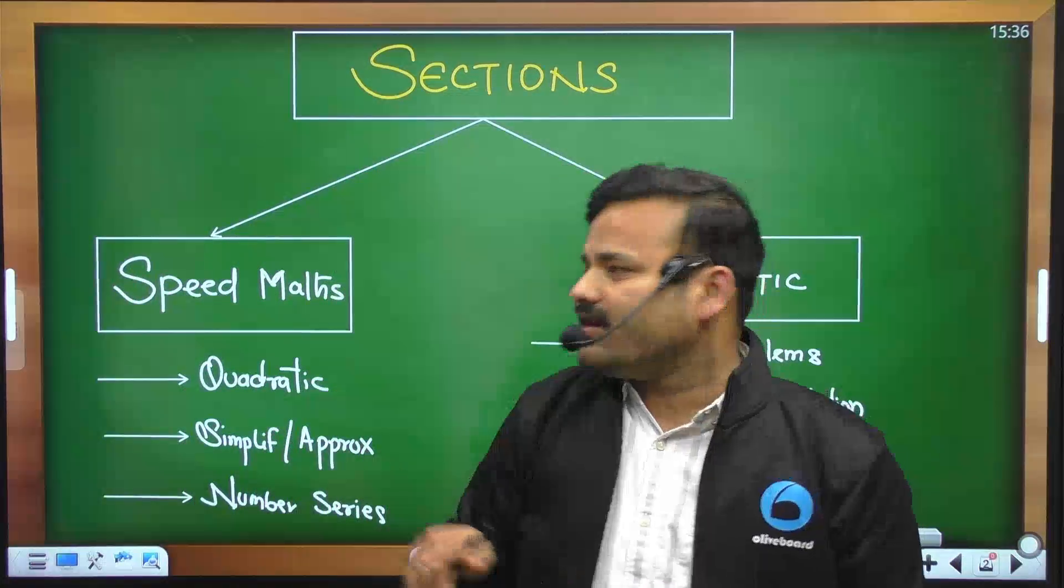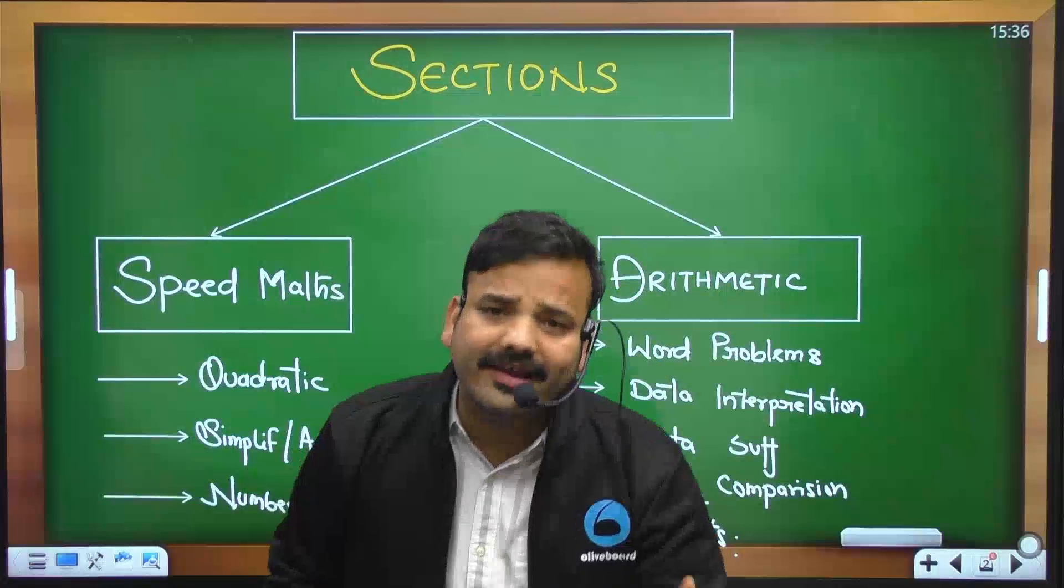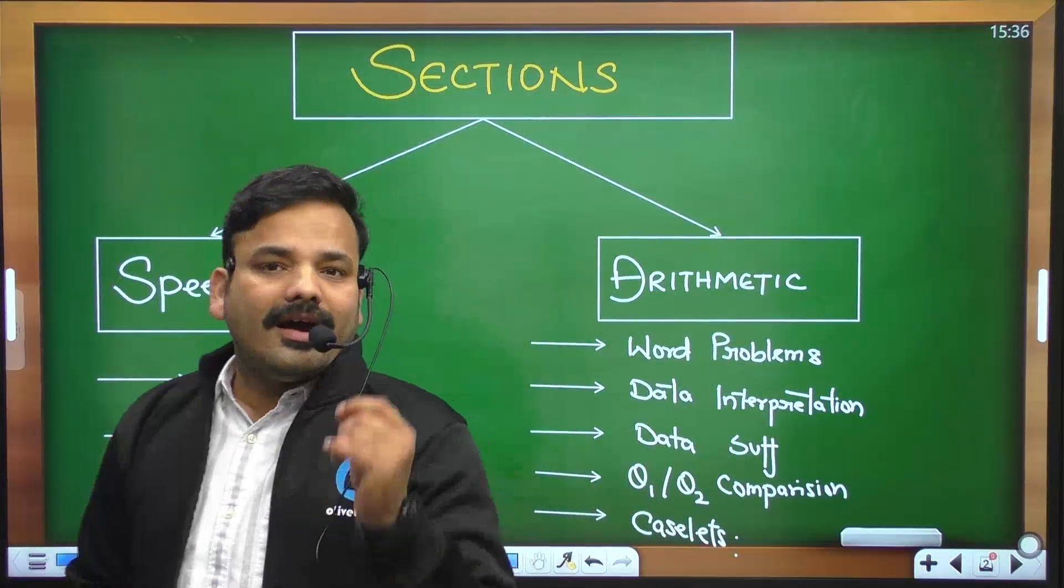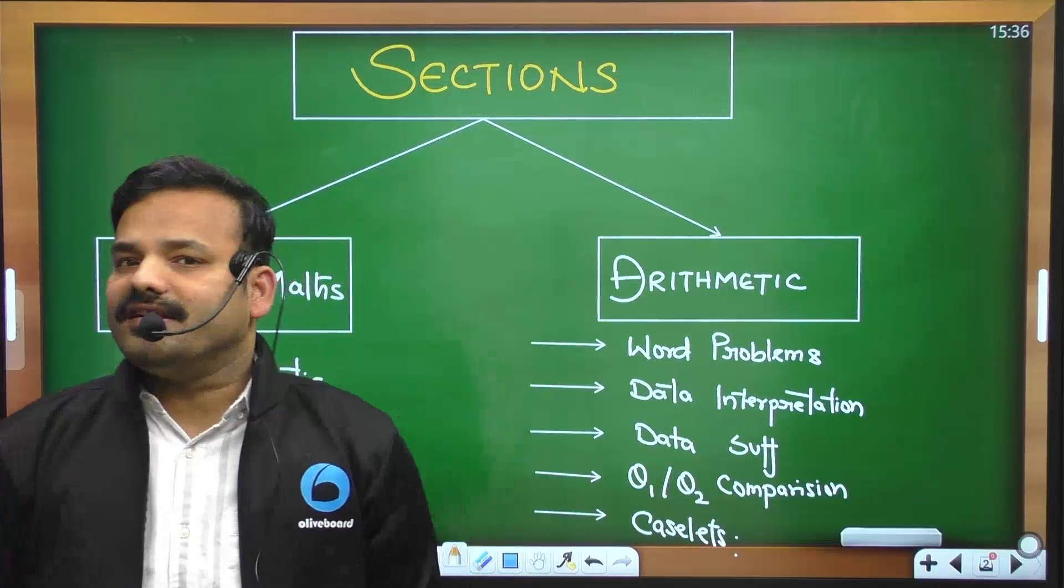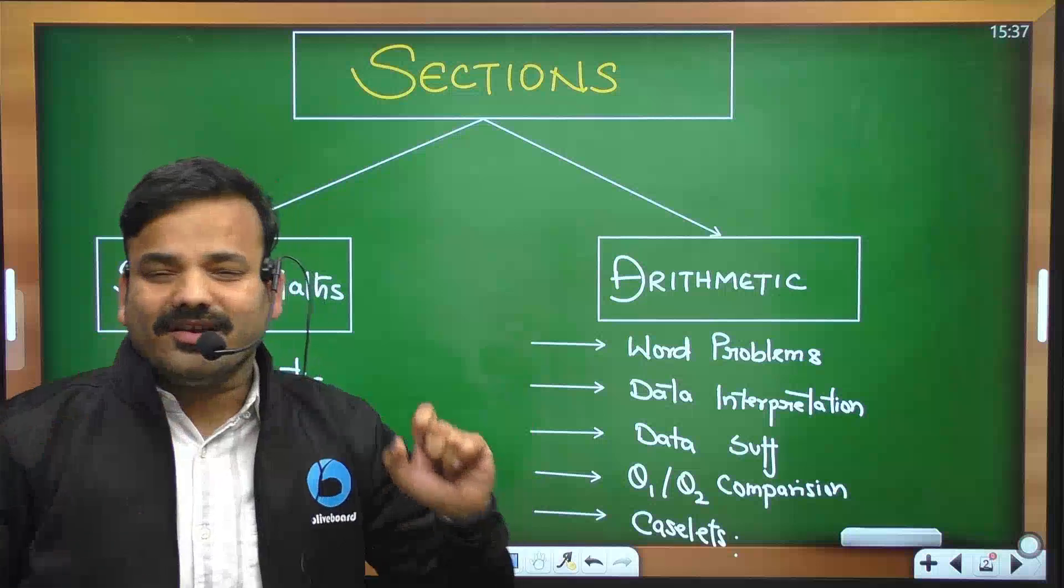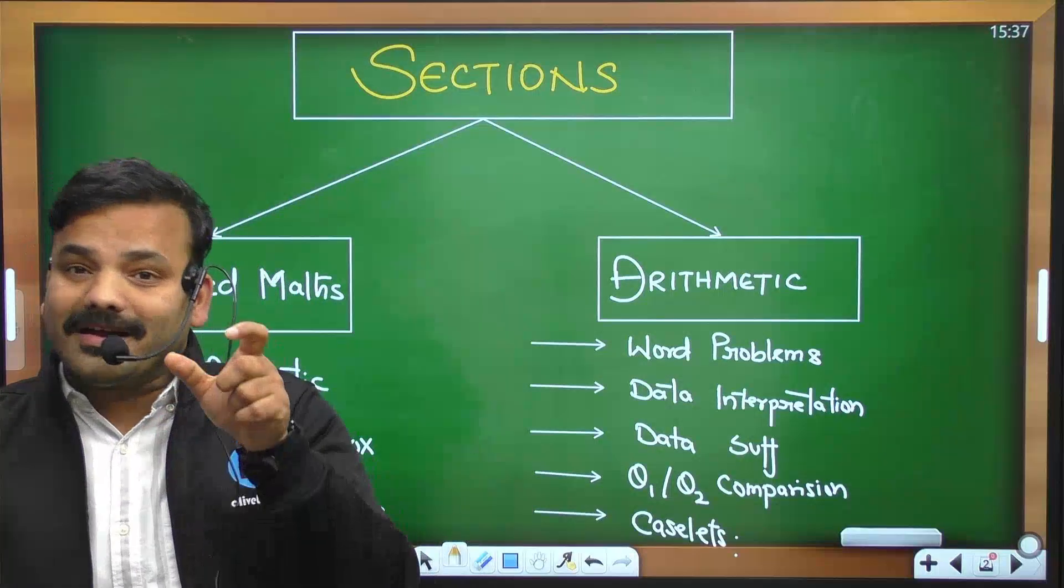Kai bachche yeh galti karte hain ki voh pre ka exam nikalta, aur yahi galti hai ki baar baar voh aapne papa ji ko yeh bolta hai ki papa is baar 1 mark se reh gaya, aapne dosto ko bolta hai ki 0.25 se nikal ka. Toh cutoff barrier nahi hai, aap cutoff ho se 5-7 marks upar bhi la sakte ho. Kisine aapka haath nahi roka hua.